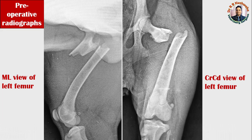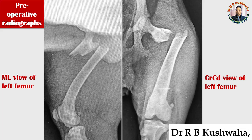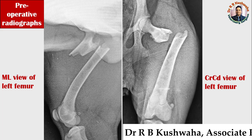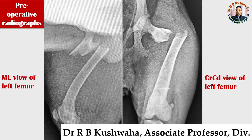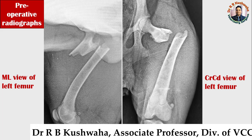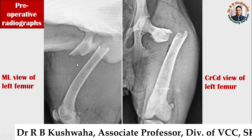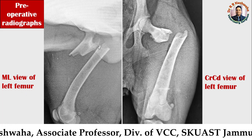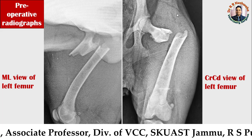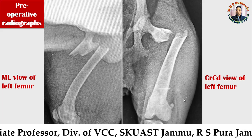These are the pre-operative radiographs of the non-descript dog. This dog had a history of road traffic accident. When we took the radiographs, we found there was a proximal metaphyseal fracture of the left femur bone. This is the mediolateral view of the left femur, and this one is the craniocaudal view of the left femur.